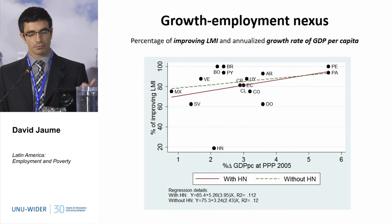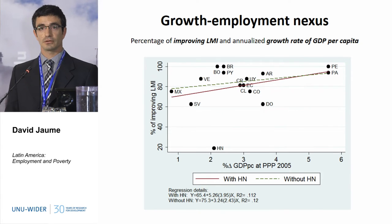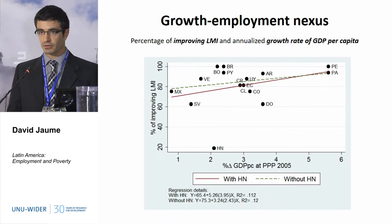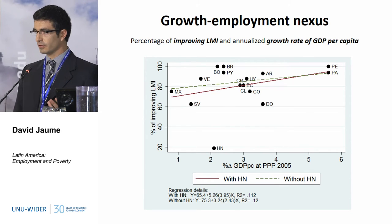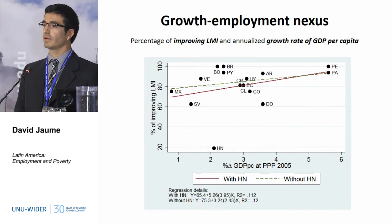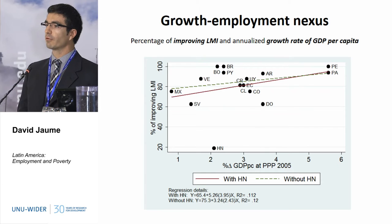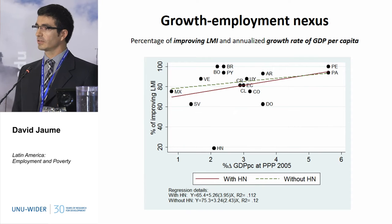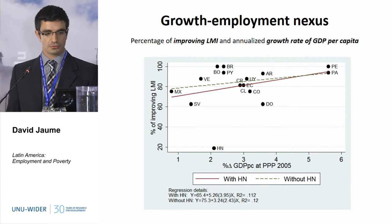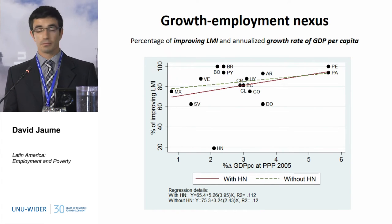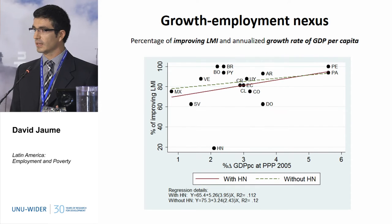In this graph, what we have on the vertical axis is the percentage of labour market indicators that improve, and on the horizontal axis is the rate of economic growth. We can see that the slope of the curve is positive, indicating that in general countries with larger rates of economic growth also experience a larger share of labour market indicators moving in the welfare improvement direction. In the extremes, the two countries that experience the larger rate of economic growth — Peru and Panama — experience an improvement of almost 100% of the labour market indicators.